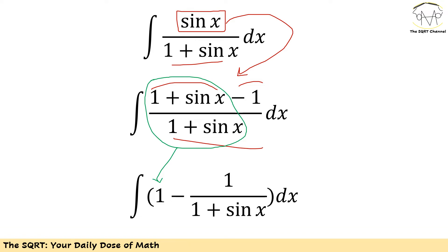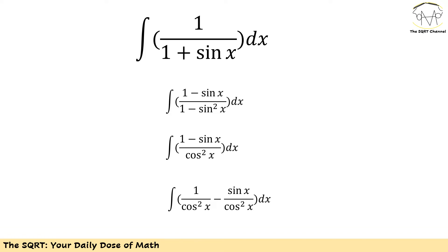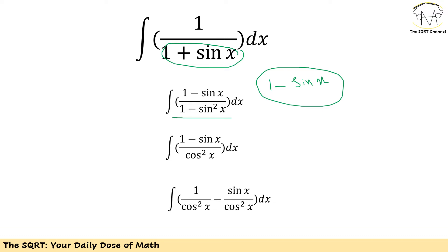The first term is easy. We need to focus on the second term: the integral of 1 over 1 plus sine of x, dx. I am going to rewrite it by multiplying 1 minus sine of x in both the top and bottom of this fraction. The top becomes 1 minus sine of x, and the bottom becomes 1 plus sine of x times 1 minus sine of x, which equals 1 minus sine squared of x. Now 1 minus sine squared of x is just cosine squared of x.